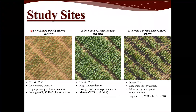We evaluated these four methods at three study sites: a low canopy density hybrid site at 33 days after planting with high ground representation; a high canopy density hybrid site at 57–60 days near relative maturity with low ground representation; and a moderate canopy density inbred trial, where the canopy doesn't close completely as in hybrids, giving moderate ground representation even during late vegetative growth.